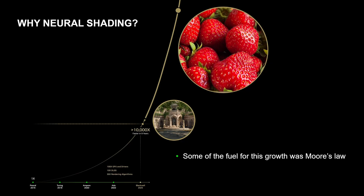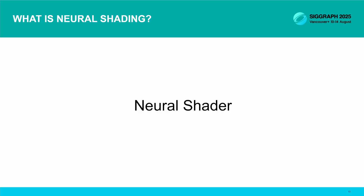The hardware got faster every year on a reliable schedule, and graphics pipelines could evolve to take advantage of it. Today, Moore's Law is effectively dead, and the hardware just doesn't get faster at nearly the same rate anymore. So we need a new angle to approach this problem, so we can still squeeze more juice out of this orange. And this is why we're talking about neural shading.